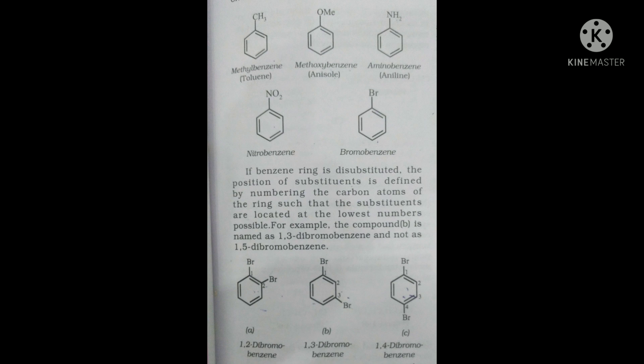An OCH3 group on benzene is called methoxybenzene. An NH2 group on benzene is called aminobenzene. An NO2 group gives nitrobenzene. Halogens give chlorobenzene, bromobenzene, or iodobenzene.